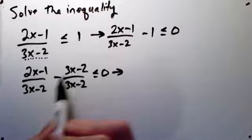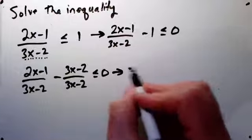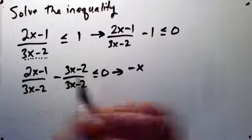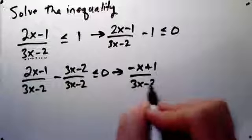Be careful here with this minus sign to distribute it quite correctly. So we have 2x minus 3x is negative x, negative 1 minus minus 2 is plus 1 over 3x minus 2.